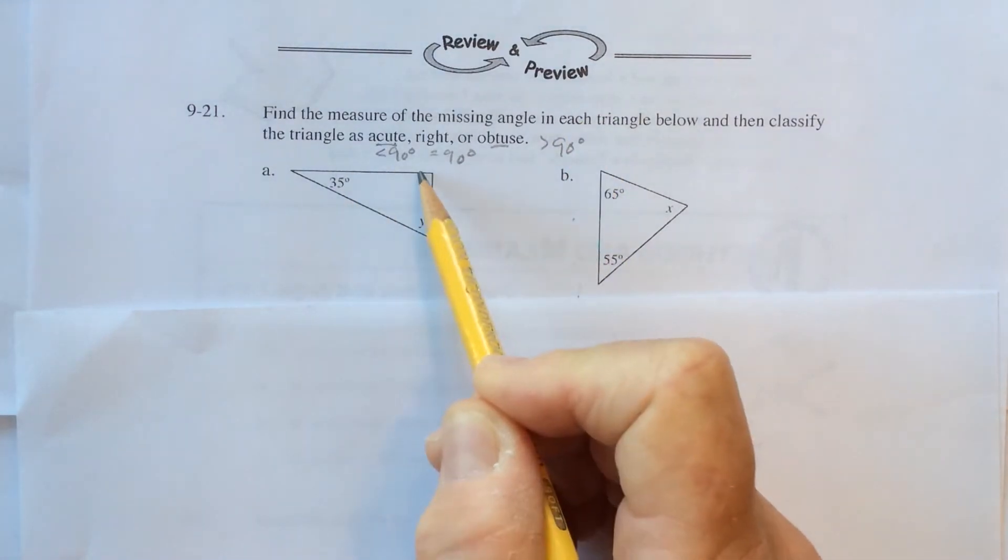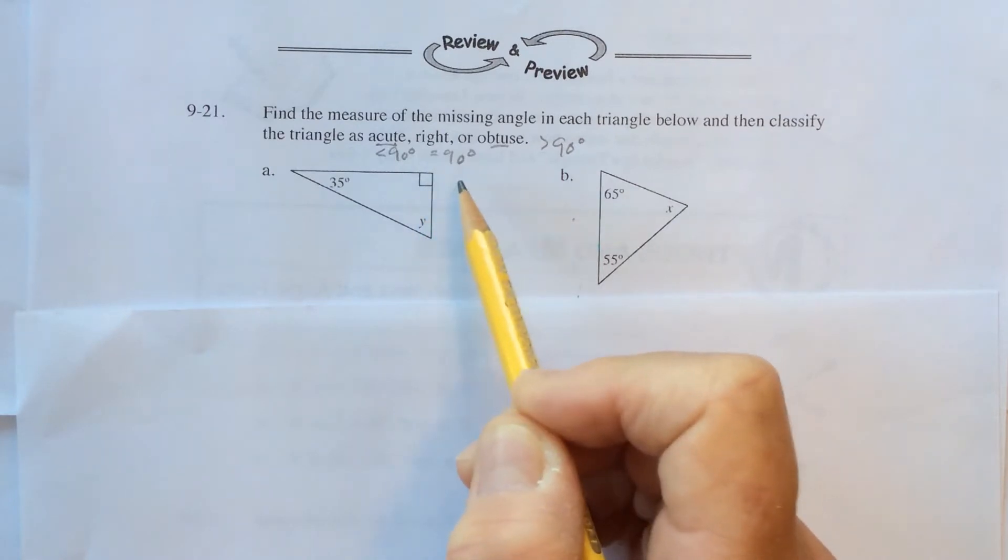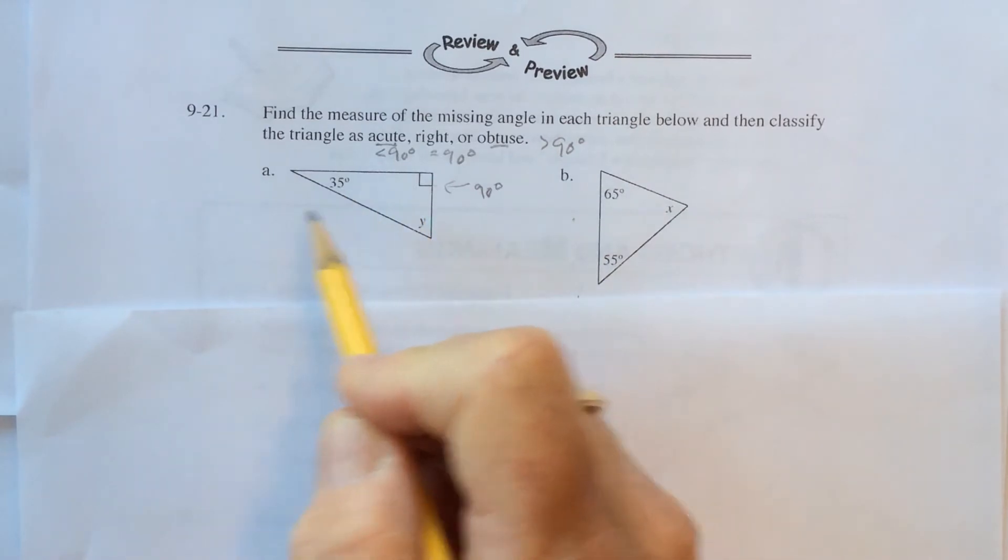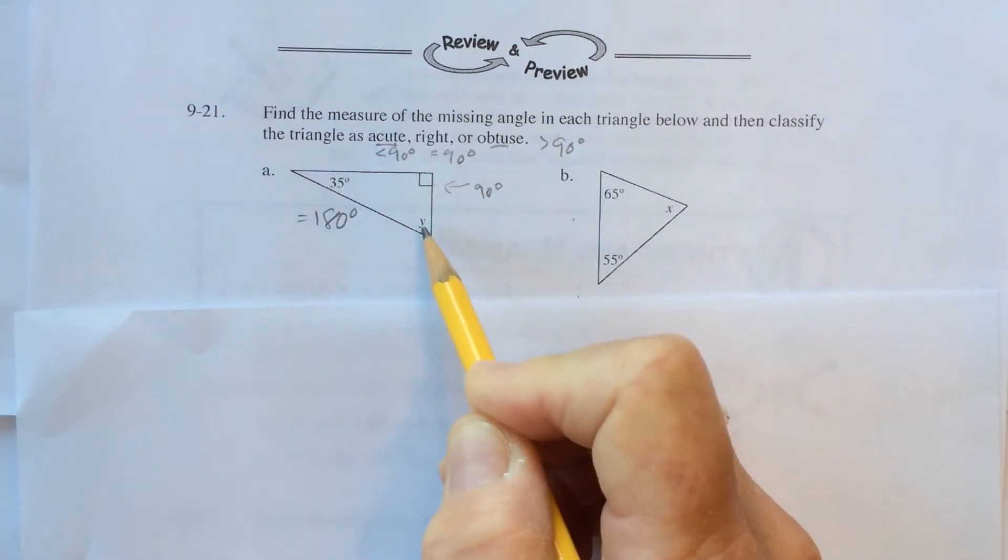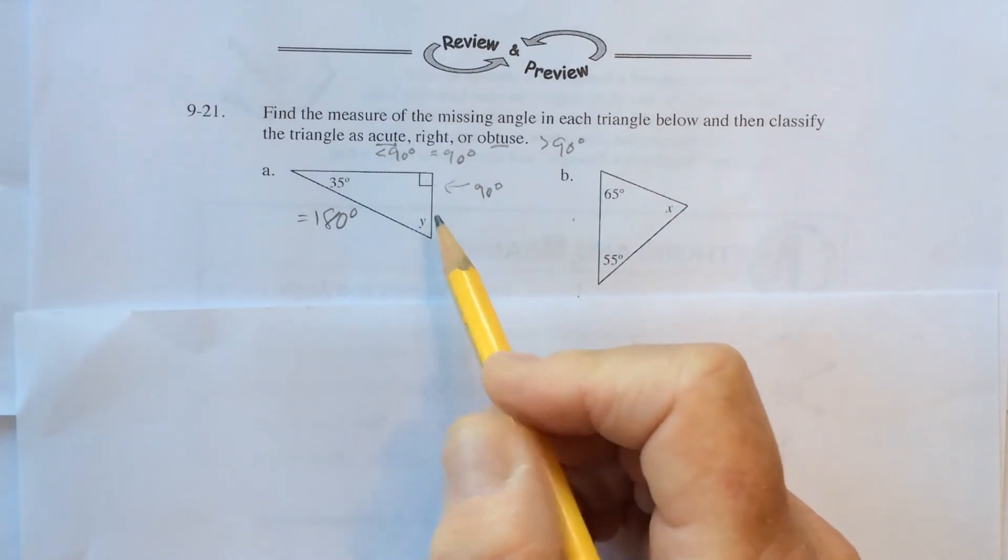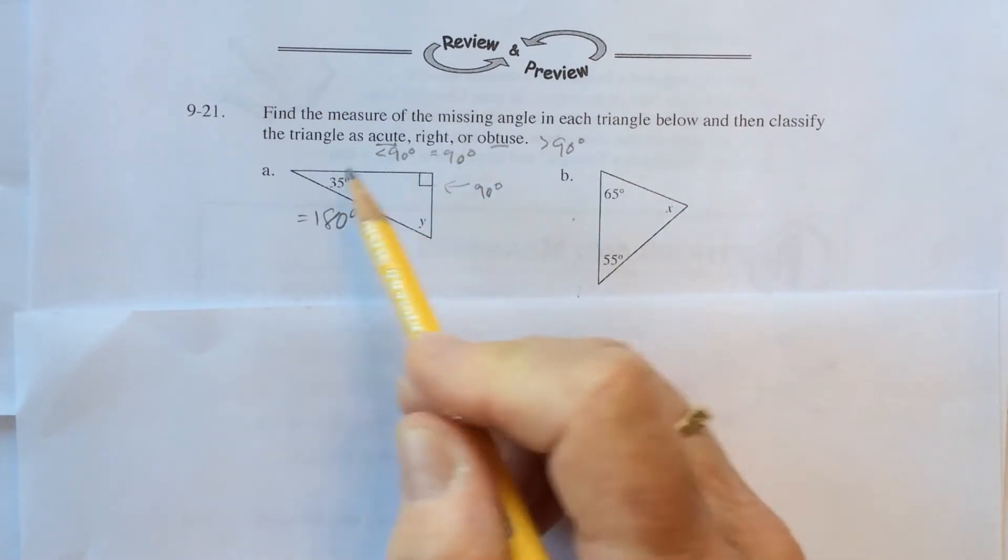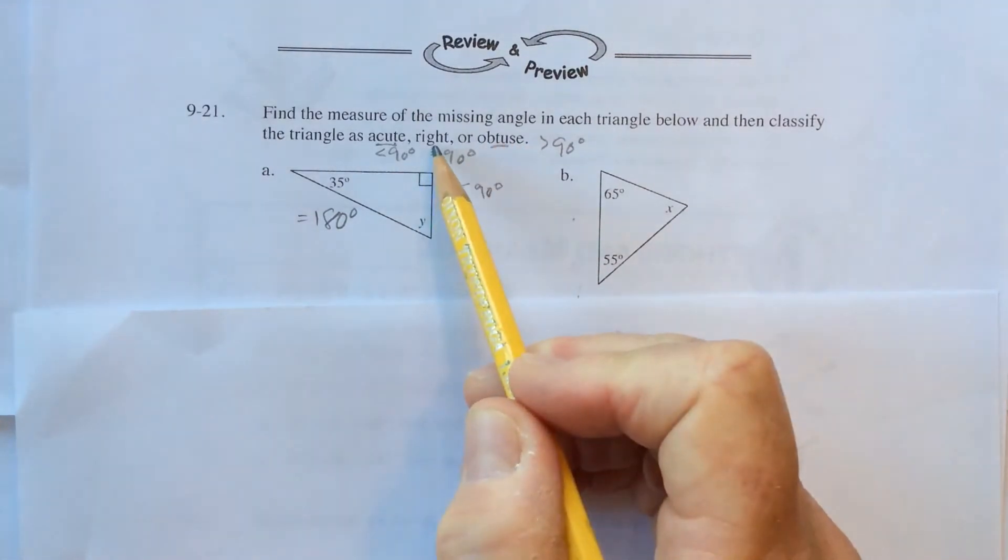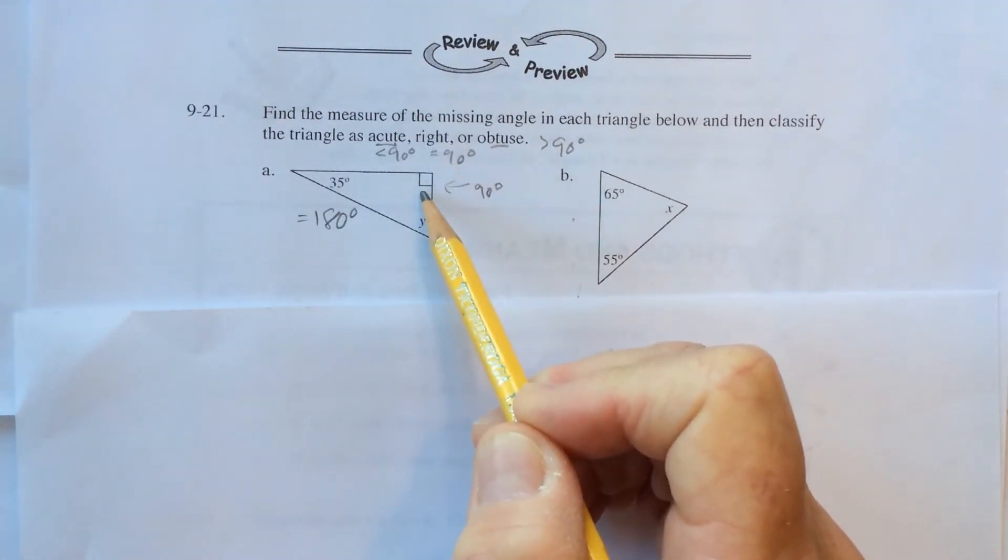This triangle right here is marked in the corner with a square, which means that is a right angle, which means it's 90 degrees. The entire triangle is going to add up to 180 degrees. So to find the measure of angle Y, subtract 90 and 35 from 180. And as you can see, it's marked as a right triangle.